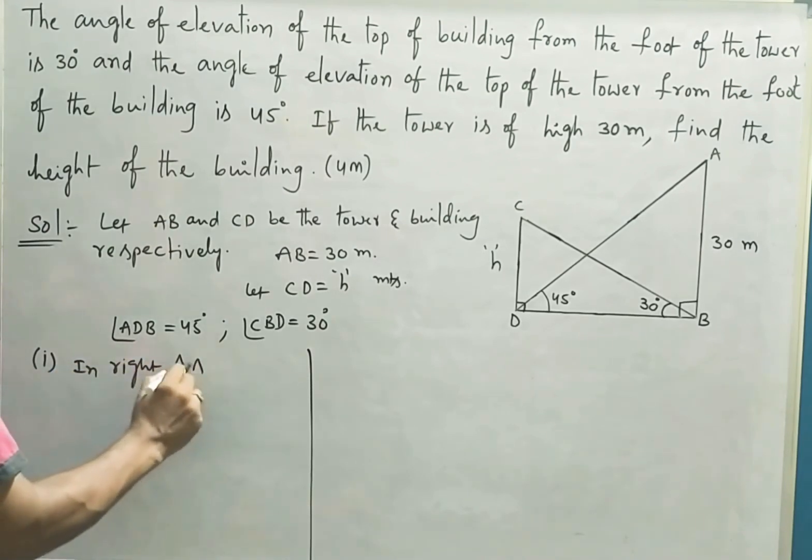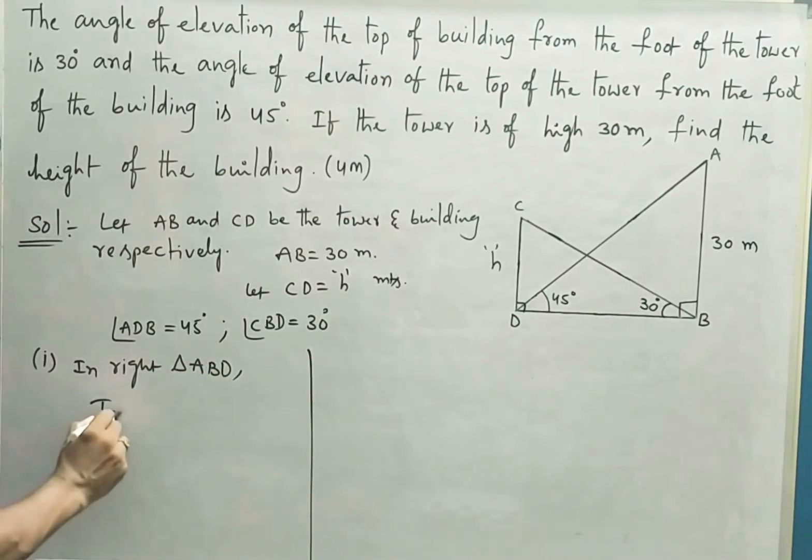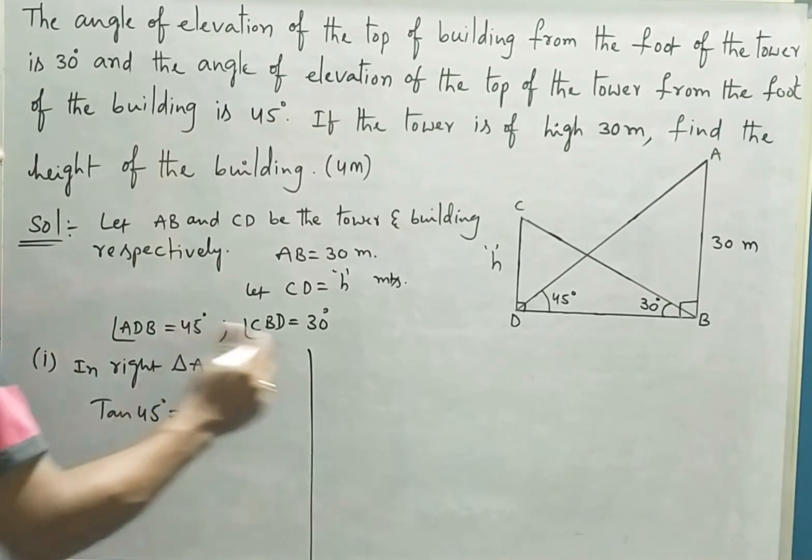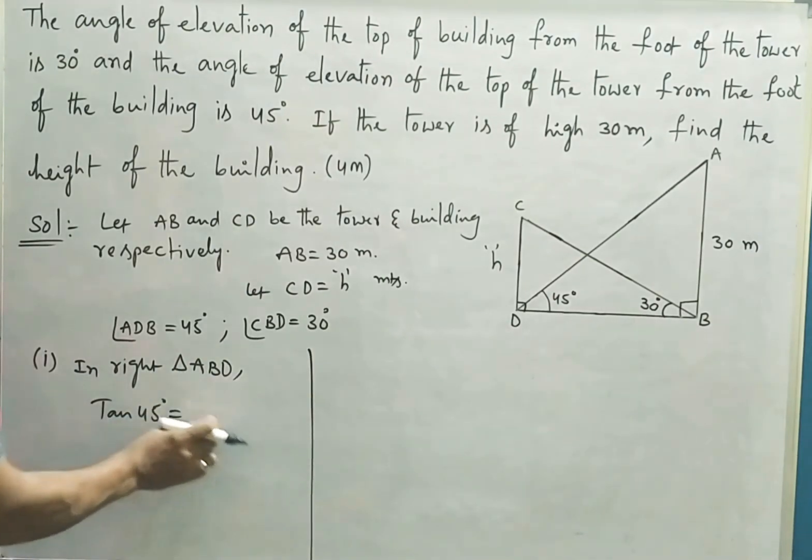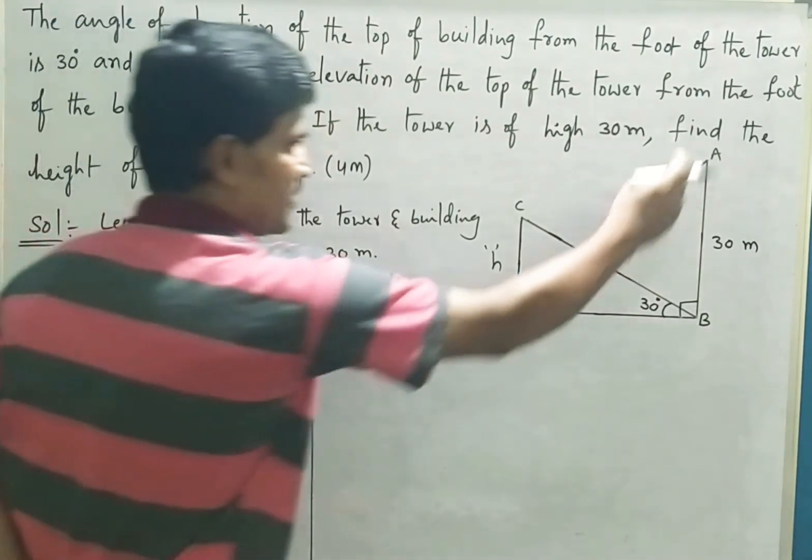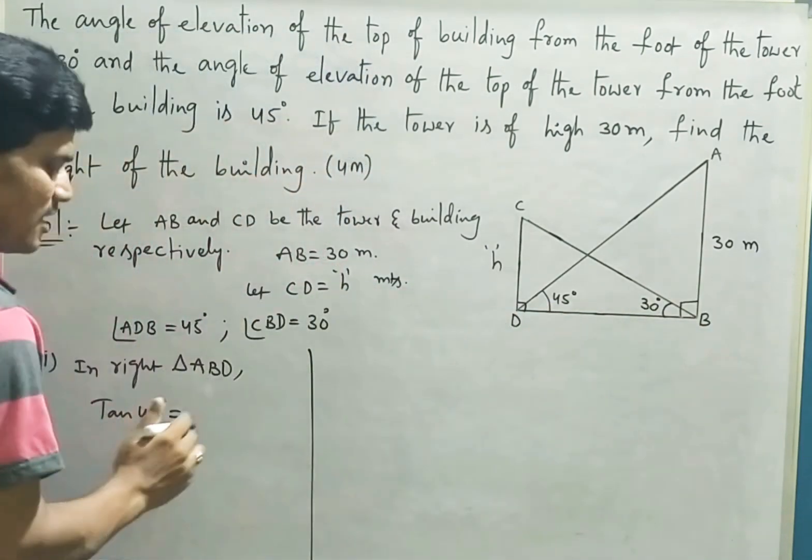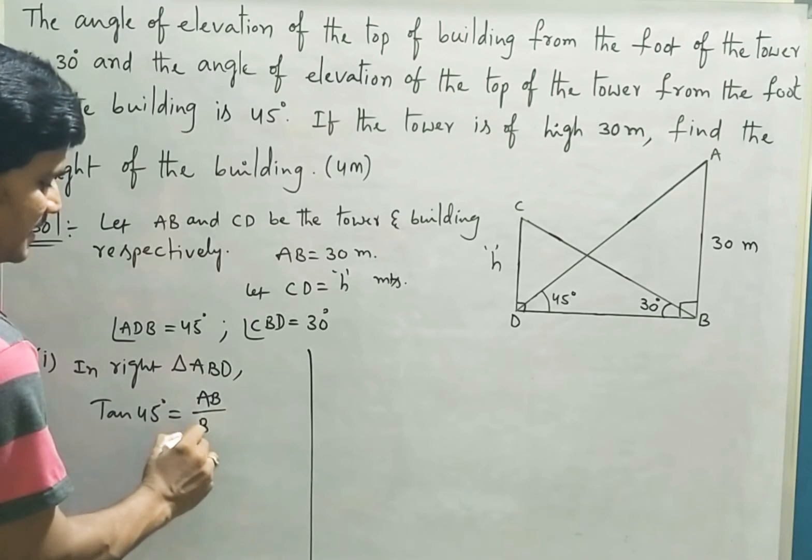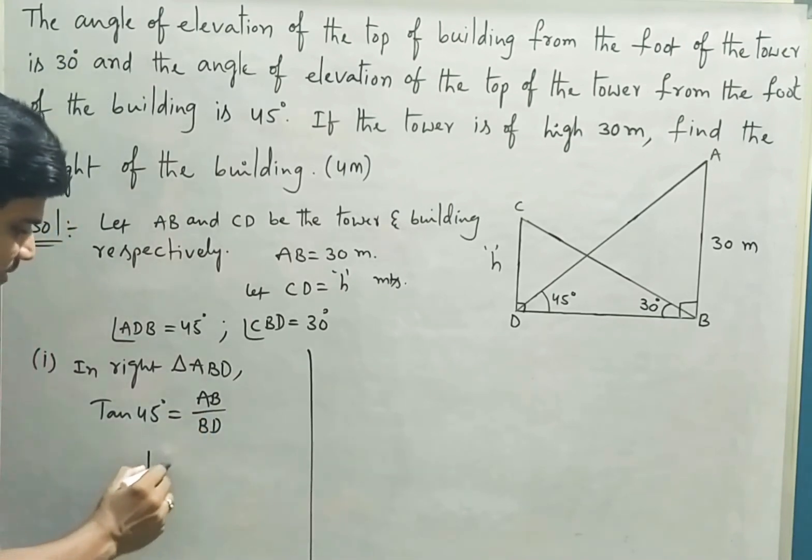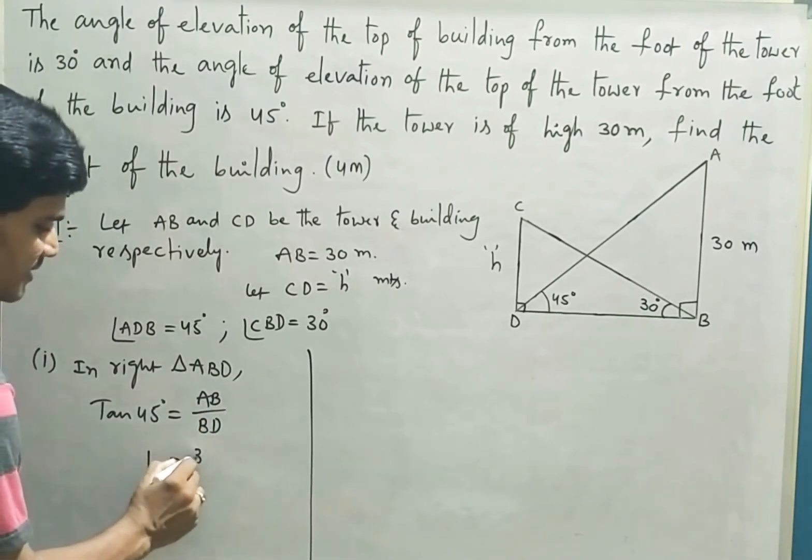In right triangle ABD, tan 45 - what is opposite to 45? See, whenever you check the tan ratio, the tan ratio is the ratio for a right angle. It is opposite side to adjacent side: opposite side AB, adjacent side BD. Tan 45 value is 1, which equals AB (30 meters) by BD.